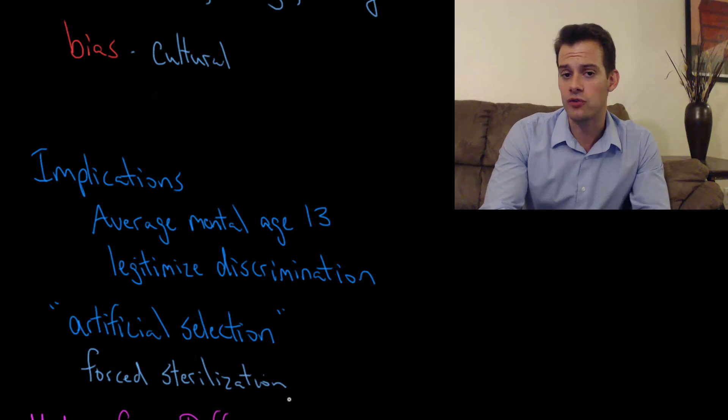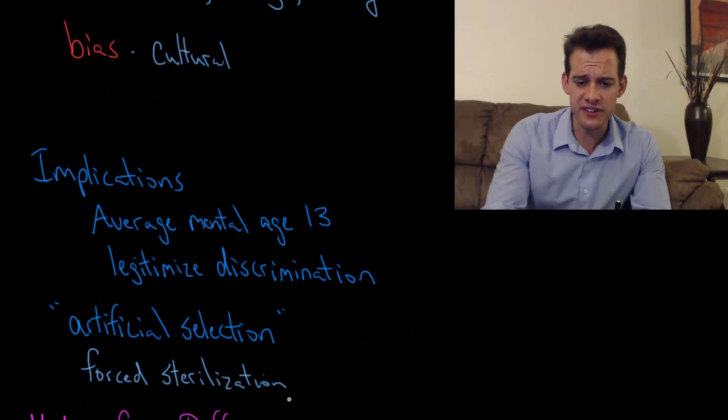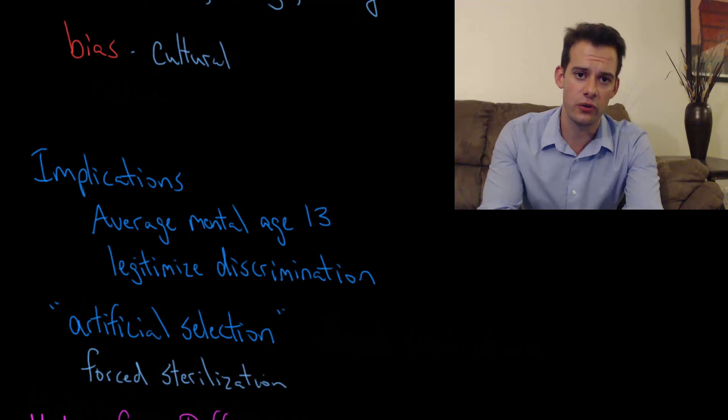They went in for medical procedures, and the doctors would also sterilize them without telling them. Most people are familiar with the horrible eugenic policies of the Nazis in the 1930s, but they're less familiar that these things were happening in the United States as well. Some sterilizations continued in some states until the 1970s. It's really a horrible part of our past, and it brings up the important point that we need to think very carefully about how psychometric tests are used and how we draw conclusions and the implications of that on certain social policies. So this brings us to modern testing.